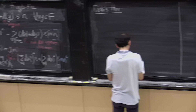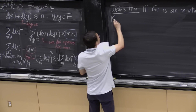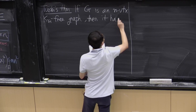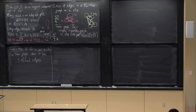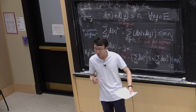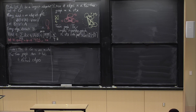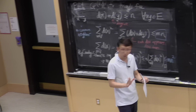If G is an n-vertex K_{r+1}-free graph, then it has at most the number of edges of the Turán graph. This is a generalization of Mantel's theorem. You can think about whether the proofs we did for Mantel's theorem generalize to Turán's theorem — it's actually not entirely clear how to do it. Let me present three different proofs of Turán's theorem.